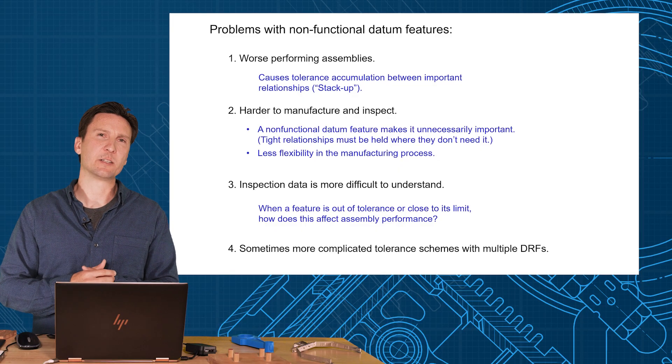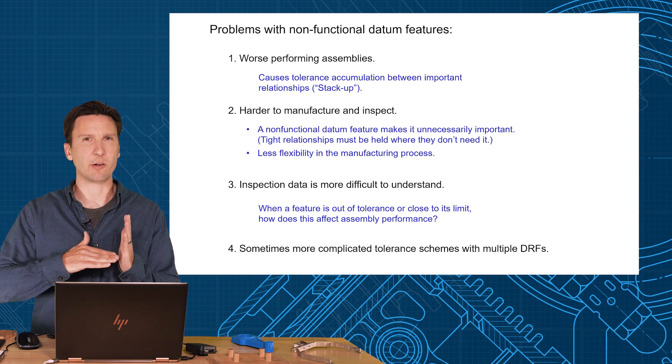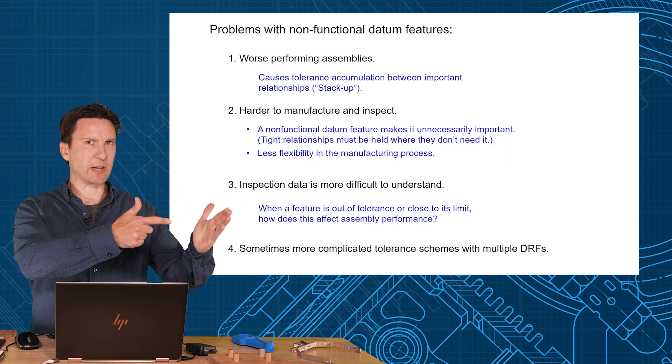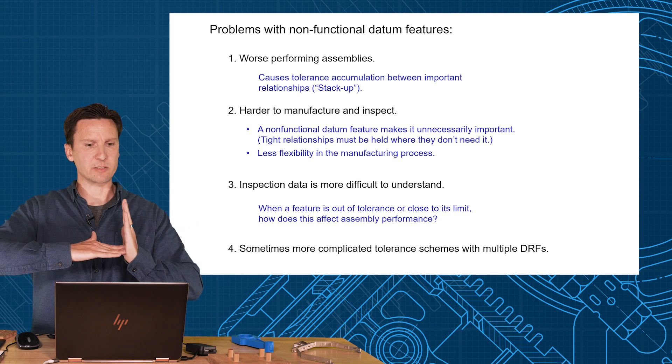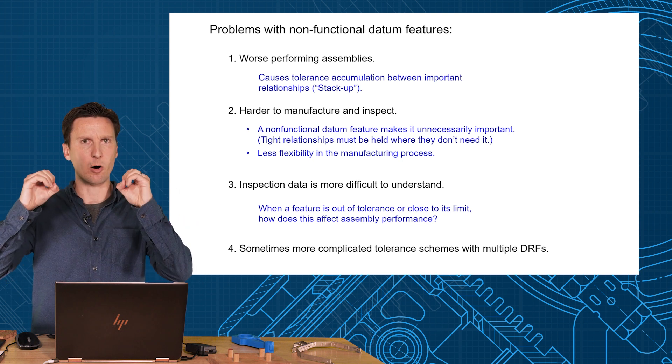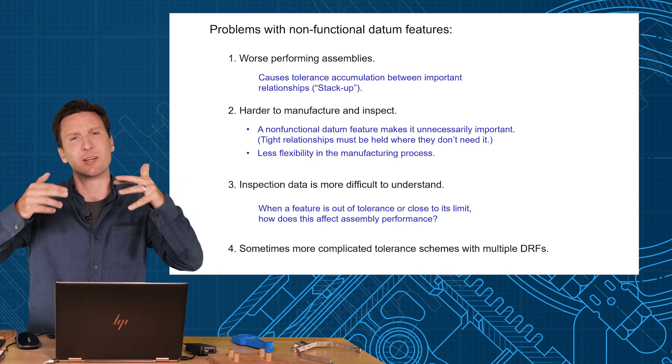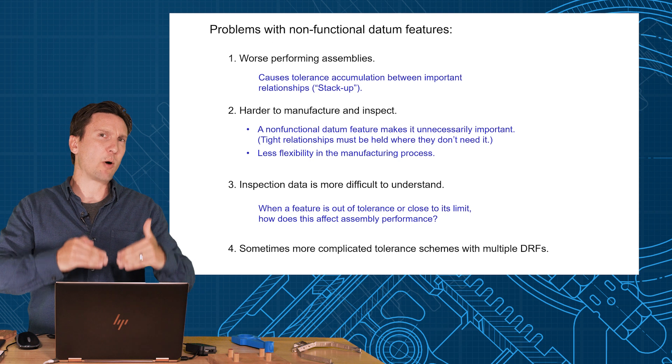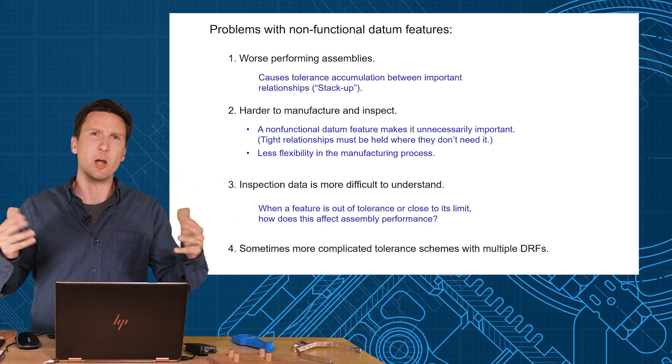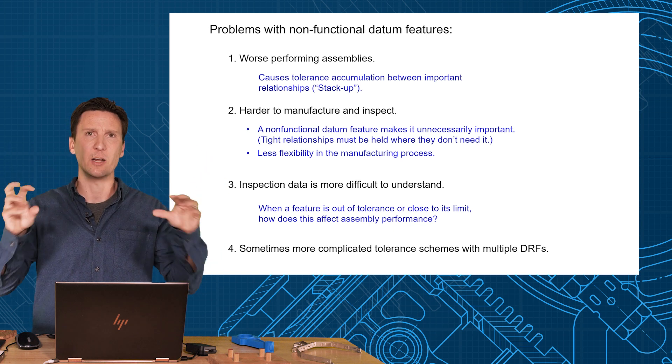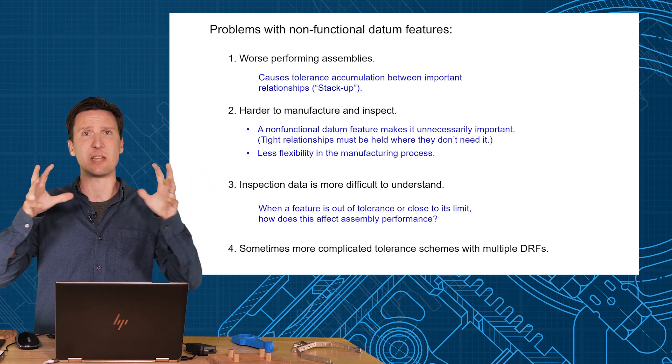Another thing that I've seen is people create more complicated tolerancing schemes when they pick non-functional datum features. They say oh the edges are the datum features because that's what manufacturing wants, and we'll pick those as A, B, and C, will closely locate the hole and slot, then we'll get on those as a new datum reference frame to locate other things. And yeah I guess that would work, but now you've got two datum reference frames to make it a lot more complicated. Why don't we just get on the datum features we care about and control everything from that. Go from the inside out rather than the outside in.